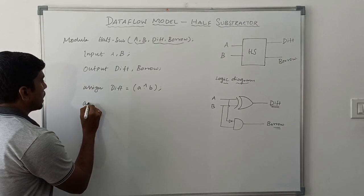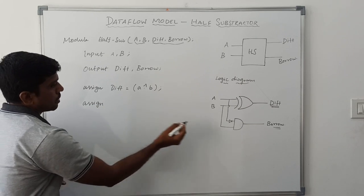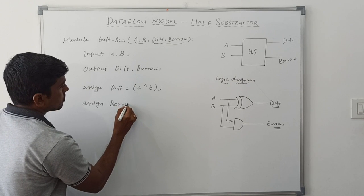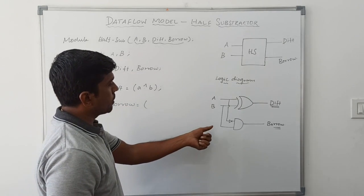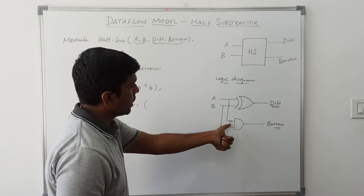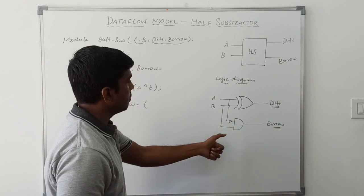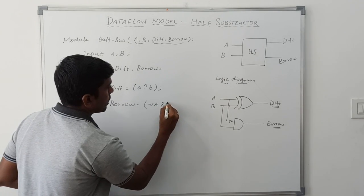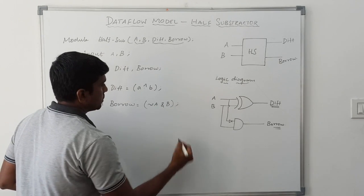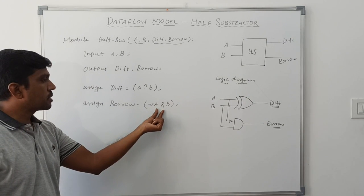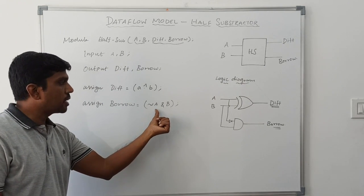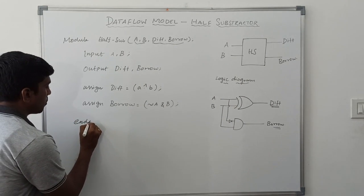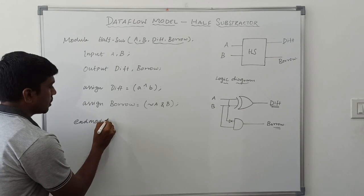Then assign the second output, which is borrow. The borrow equation is NOT A AND B — so assign borrow equals NOT A AND B. Finally, you close the module with endmodule.